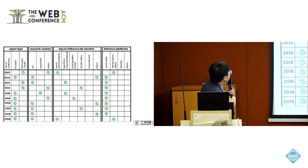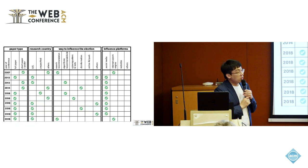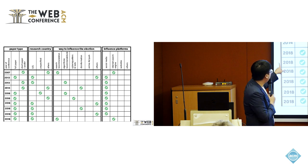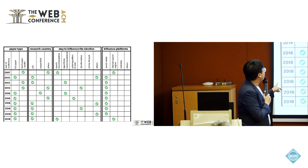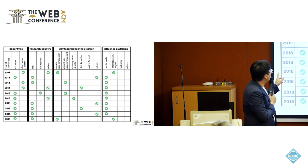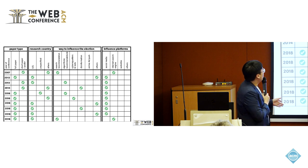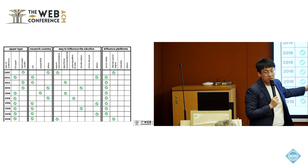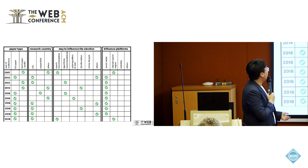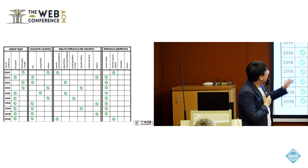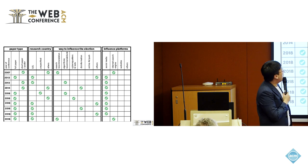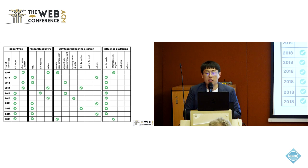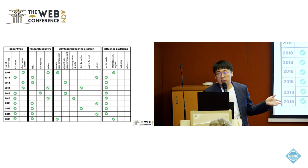Our data table includes four parts. Part one is the paper type — full paper, short paper, or poster. The second is the research country; as we can see, more papers are focused on the United States, which represents a certain bias. The third part is the way the web influences elections, and the fourth part is the platform of influence.